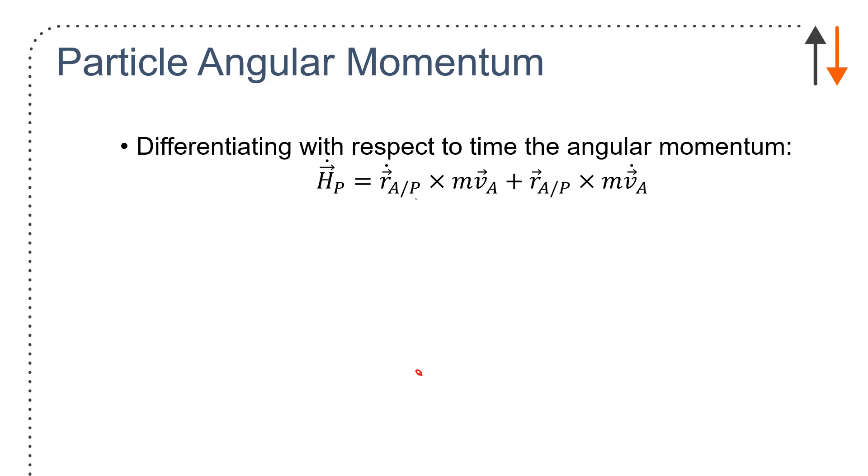This term right here, which is a velocity cross with another velocity, and then a moment arm cross with an acceleration. Looking at that, I can rewrite r_a with respect to p, v_a minus v_p. So, no problem.